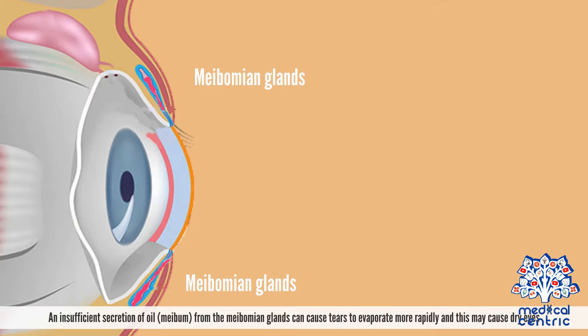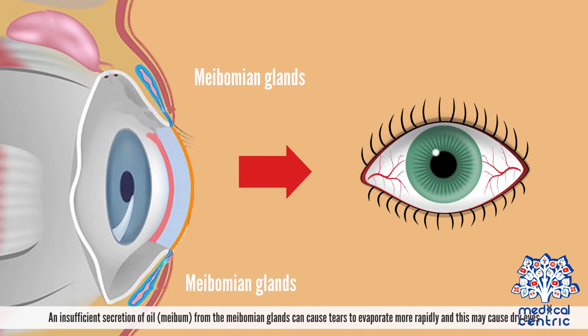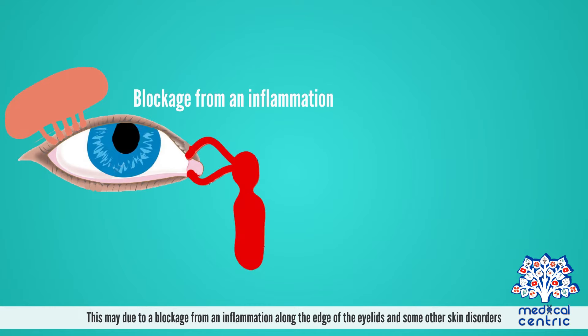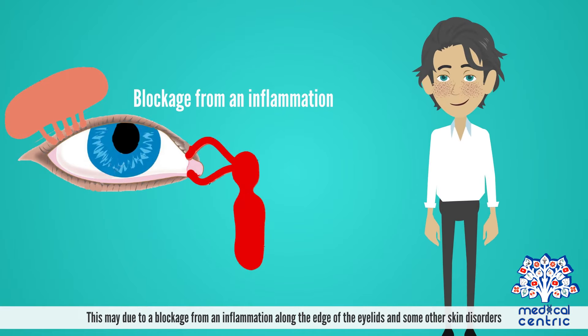Causes: An insufficient secretion of oil, or meibom, from the meibomian glands can cause tears to evaporate more rapidly, and this may cause dry eyes. This may be due to a blockage from an inflammation along the edge of the eyelids and some other skin disorders.